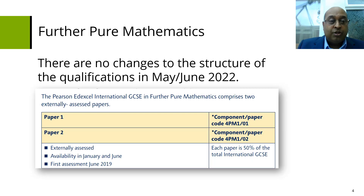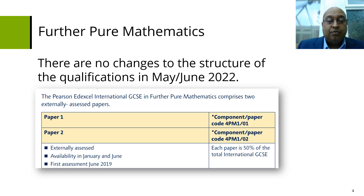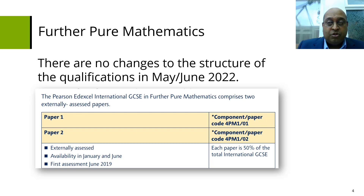Similarly, there are no changes to the structure of Further Pure Mathematics for May and June. We continue to have two papers, just as we have had in the past.